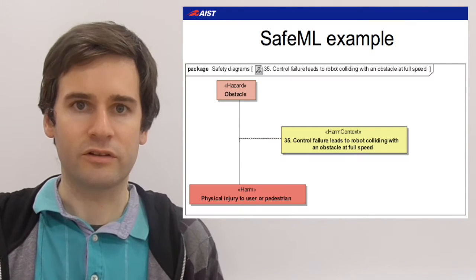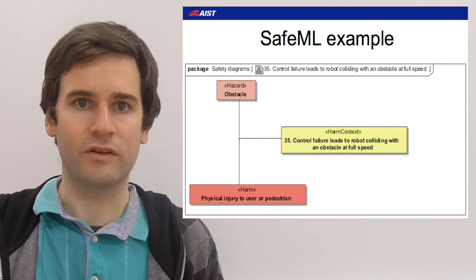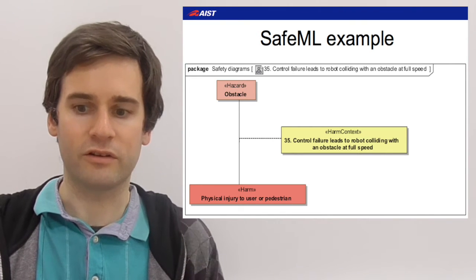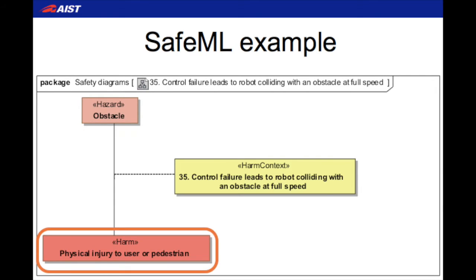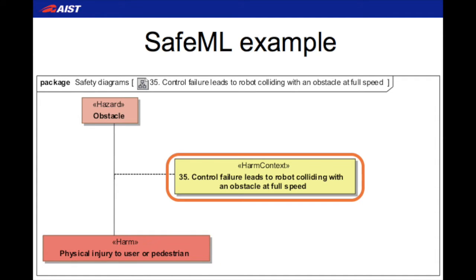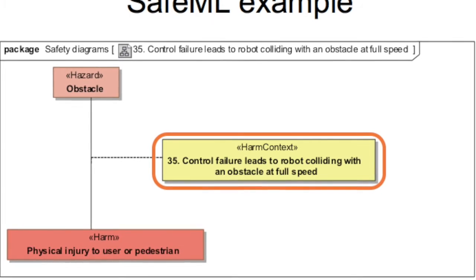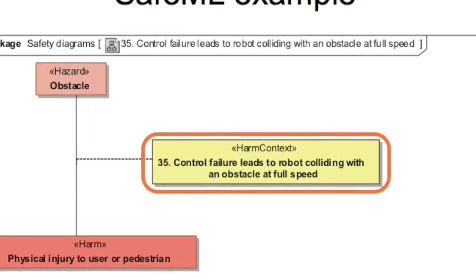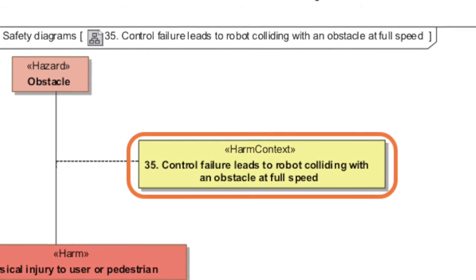On this next slide I've extracted just one part of that diagram to show the safety information relating directly to the hazard itself. This shows the hazard in the top left and the harm that it may cause in the bottom left. Connecting those is what we call a harm context, which is a special association class. This harm context defines the hazardous situation or the hazardous event that has to occur for the hazard to cause harm.